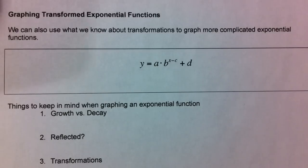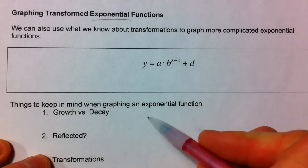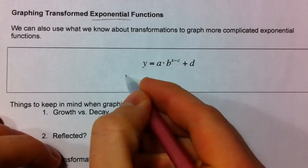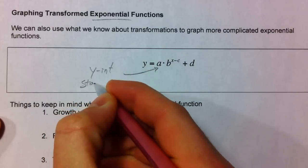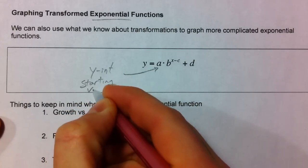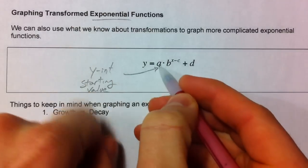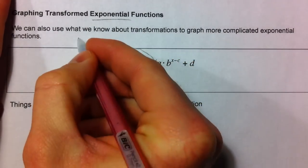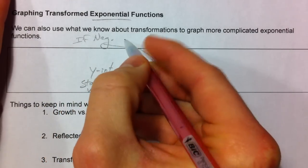Transformations of exponential functions uses our basic knowledge of transforming functions and exponential functions to graph more complicated exponentials. We've already talked about our 'a' value — it's our y-intercept or starting value. If there is no 'a' value listed, it can always be written as one. The 'a' value can also be negative; if it's negative, your graph is reflected — flipped top to bottom.